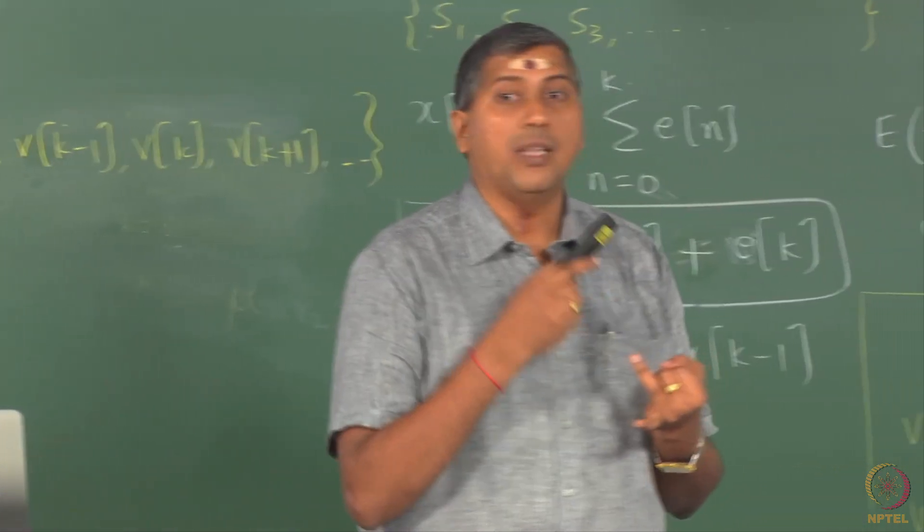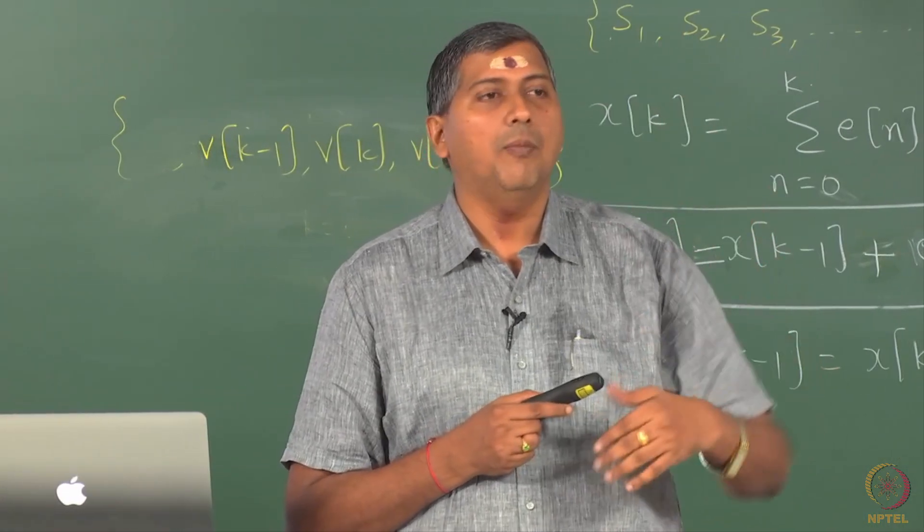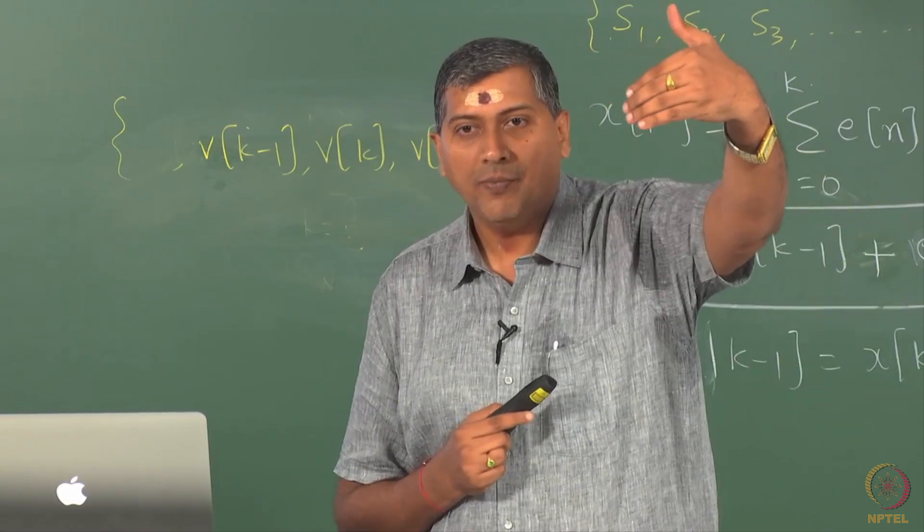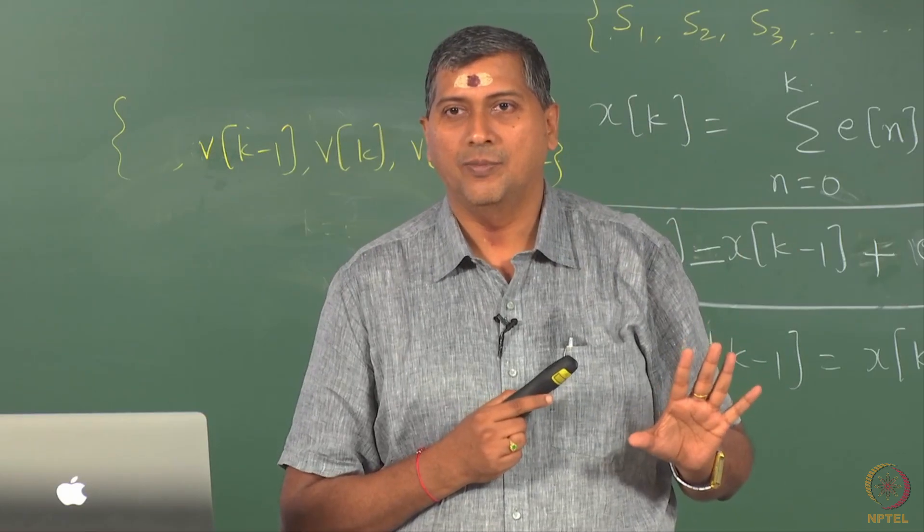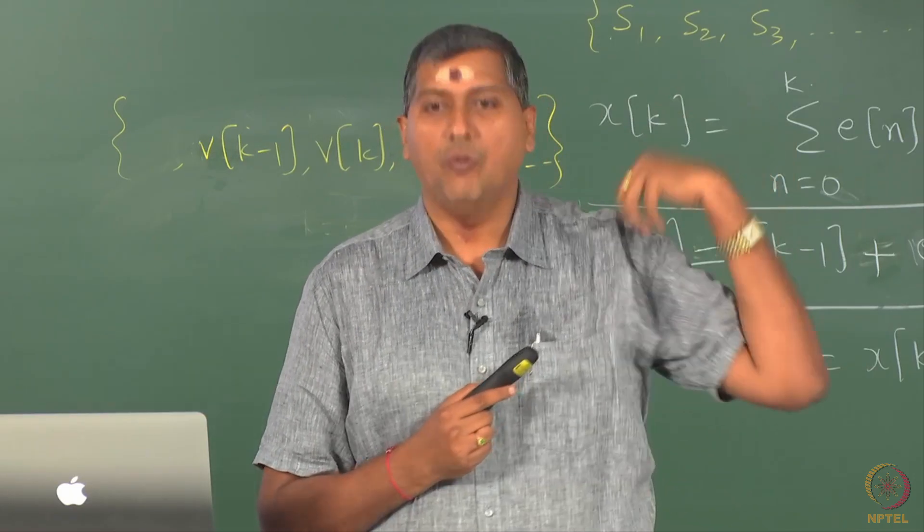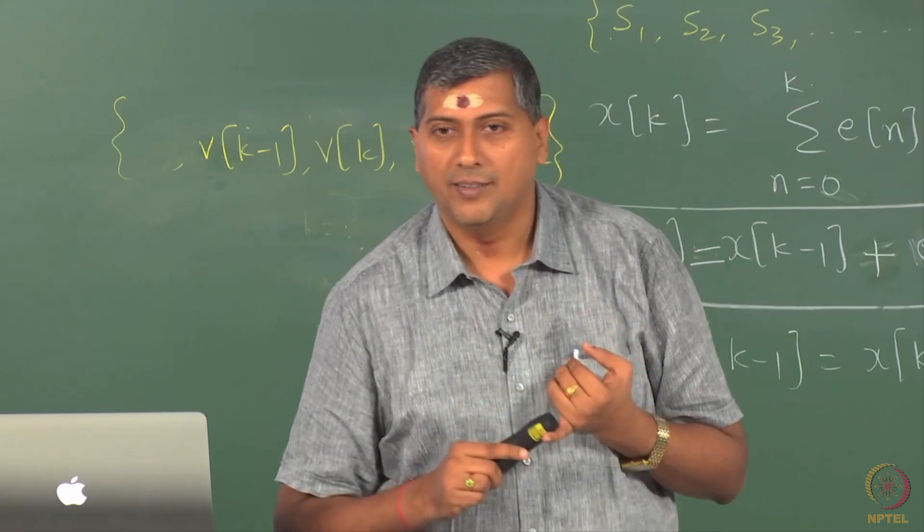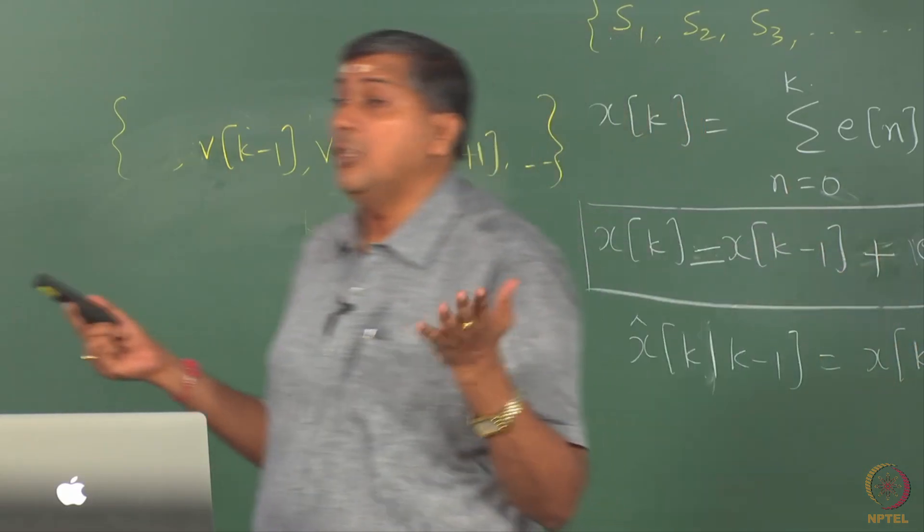It does not tell me whether v[k-L] is influencing v[k] or v[k] is influencing v[k-L]. But since we assume that there is a flow of time, here the causation is kind of taken care of. That is not an issue. We do not assume v[k] is influencing v[k-L]. So that causation is taken care of.